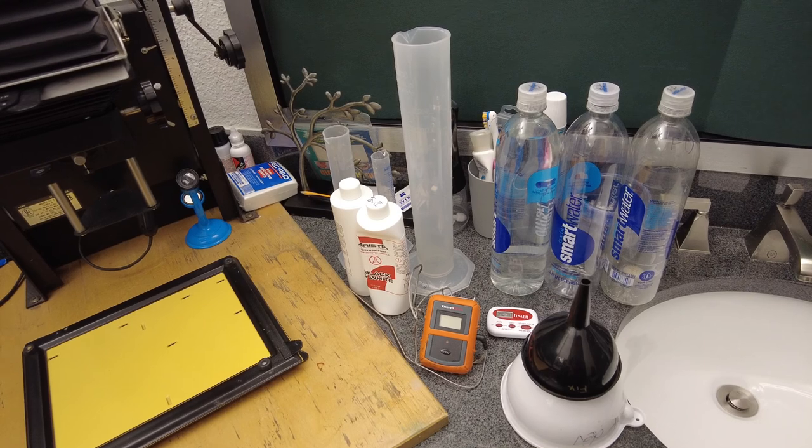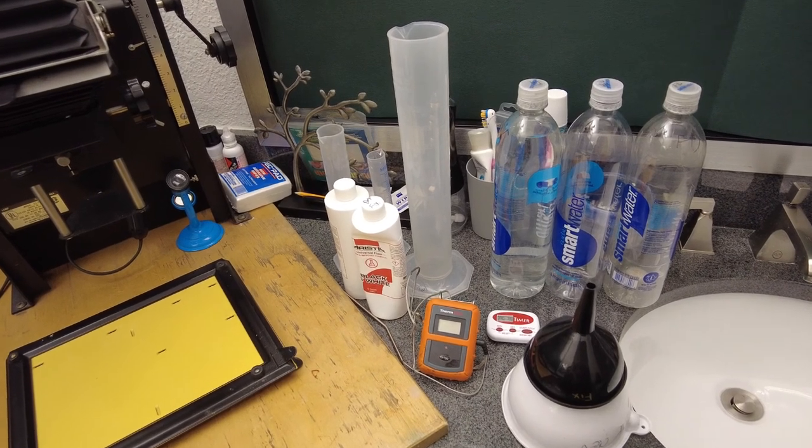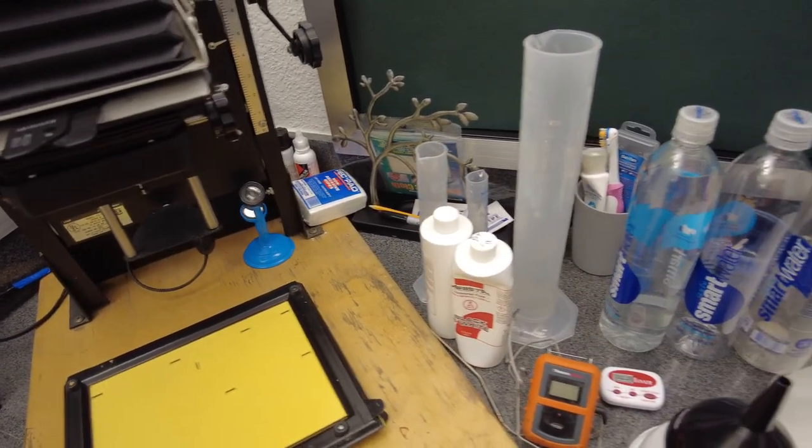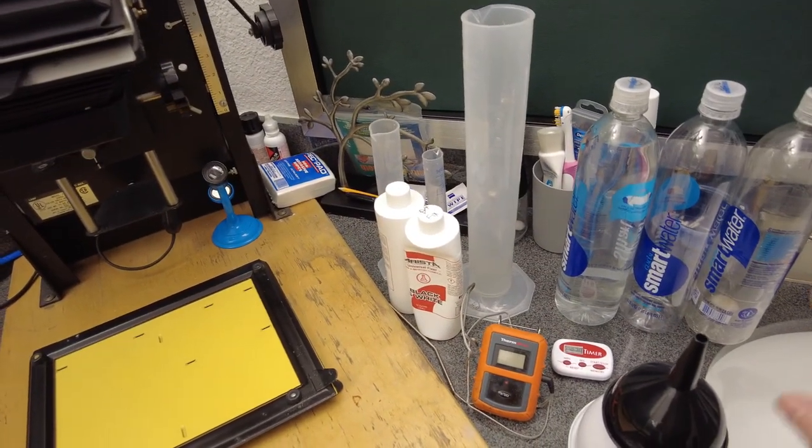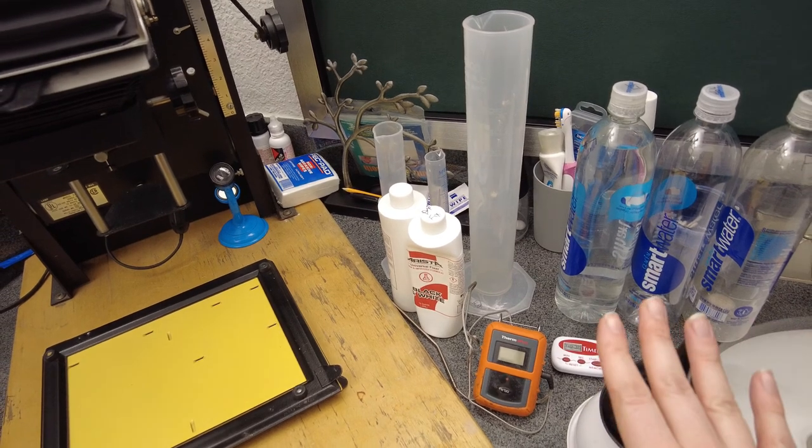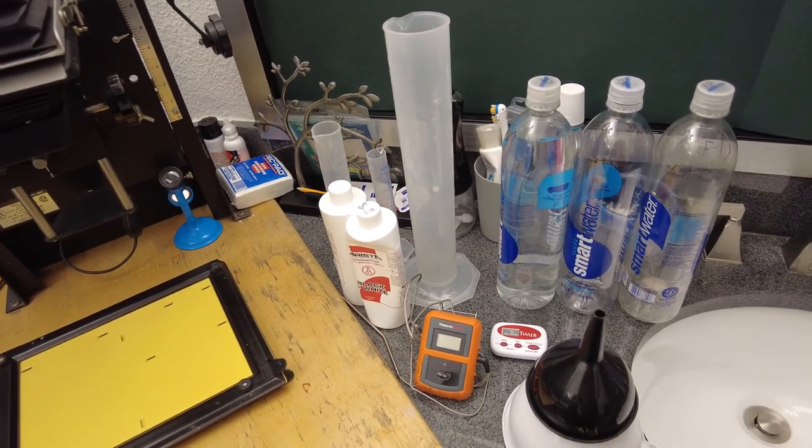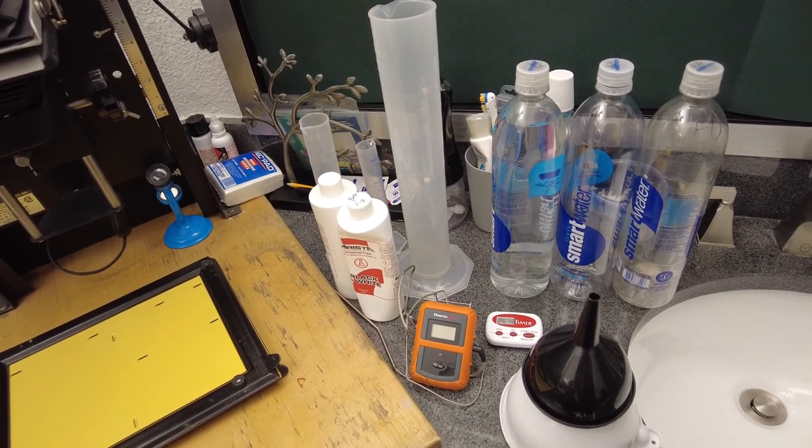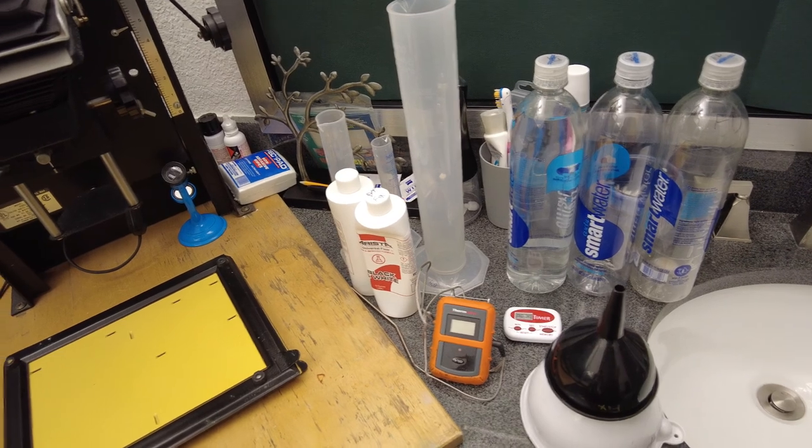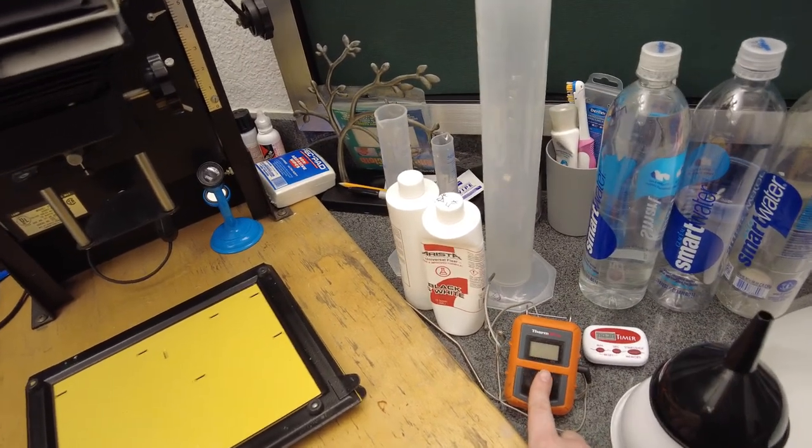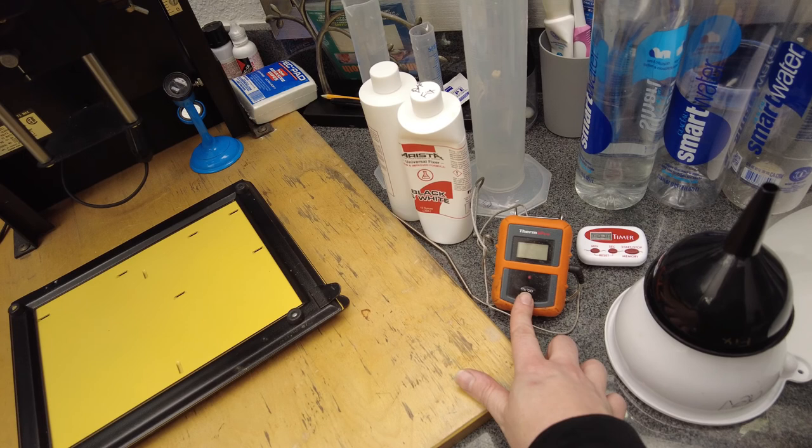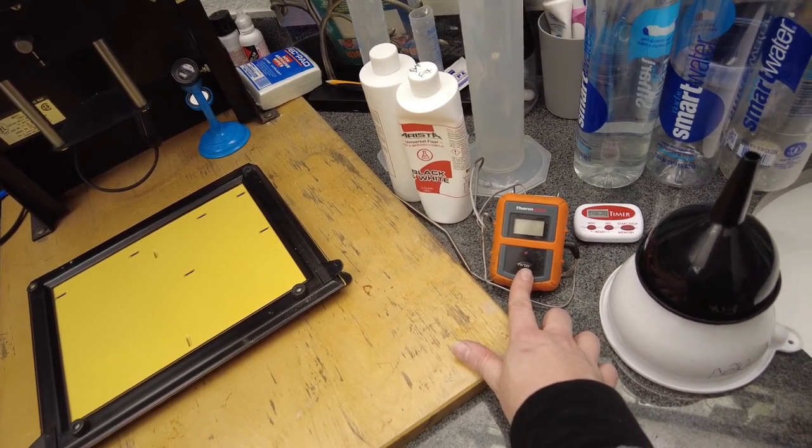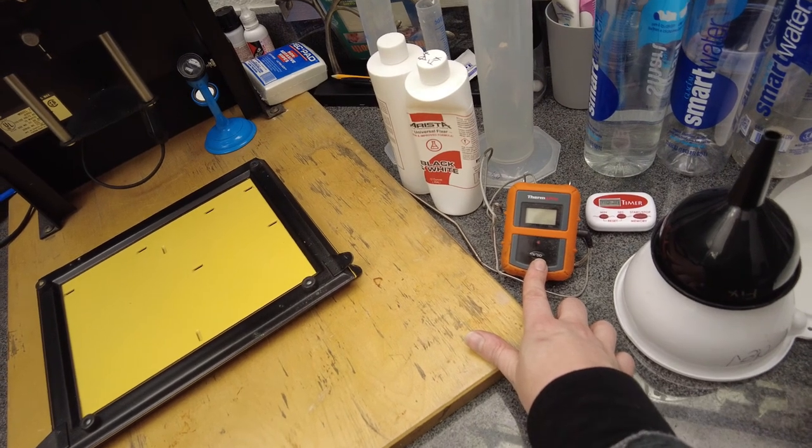Over here I have my setup for the chemicals. So I have some graduated cylinders. And here are my chemicals at a minimum. You need to have the developer and you need to have fixer. But it's recommended that you also use stop, permawash, and photo flow. You're going to want a thermometer. We happen to use an electric thermometer just because we had an extra one hanging around after we got a new one. An analog thermometer would work just as well.